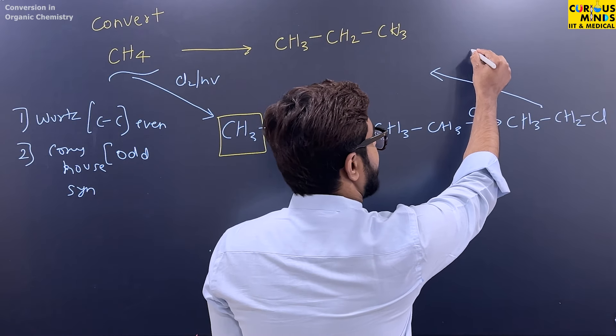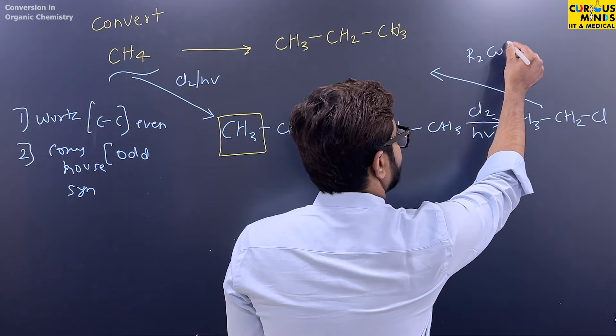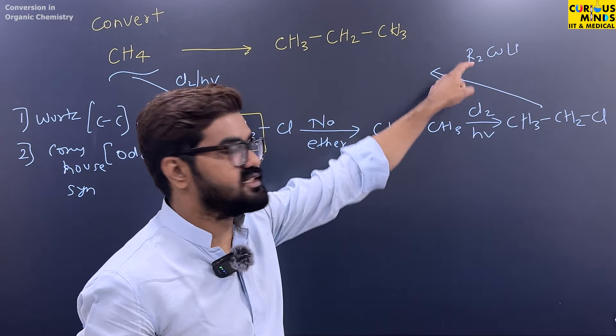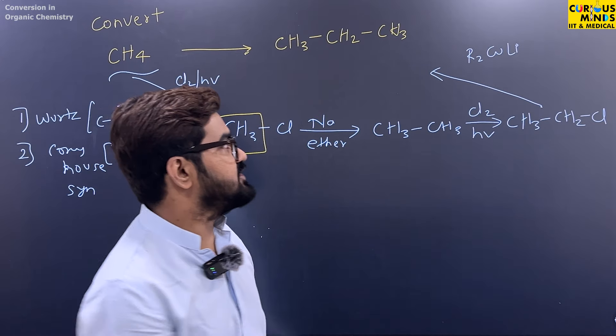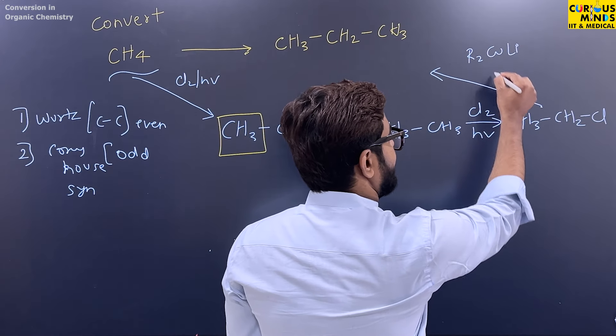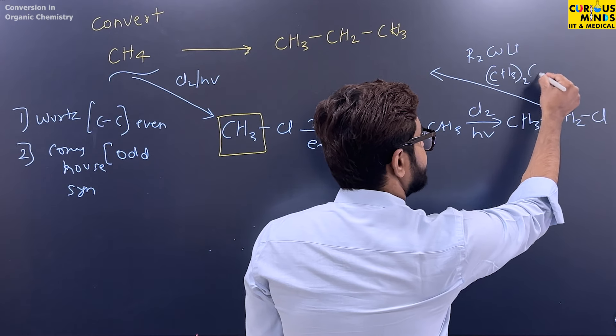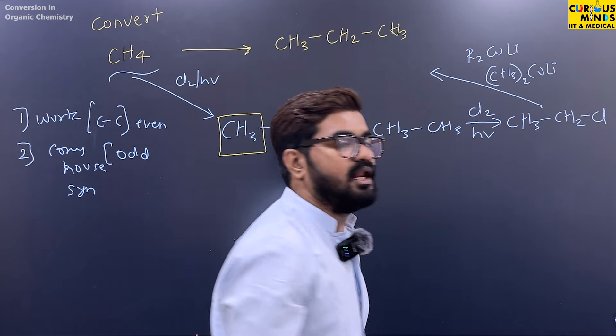The reagent is R2CuLi. So I have to add CH3 to R. What I will take? I will take CH3. So this is our reagent. It is (CH3)2CuLi. We call it Gilman reagent.